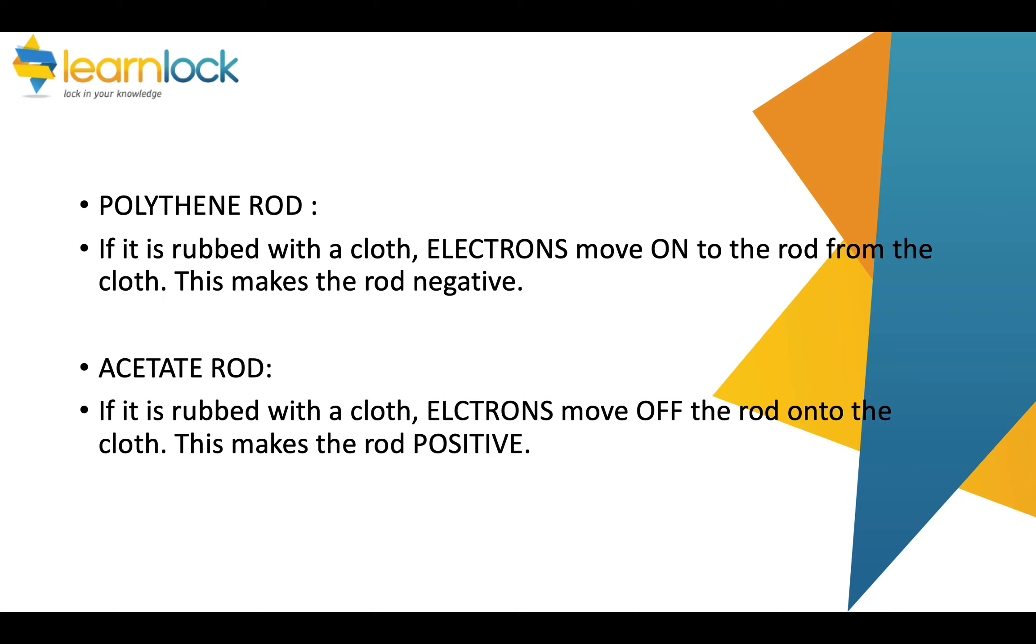Polythene rods. If they're rubbed with a cloth, electrons move onto the rod, so the rod becomes negative.